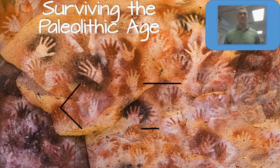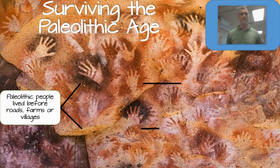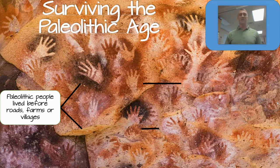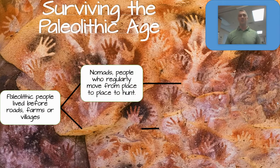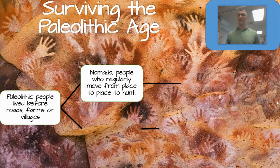Surviving the Paleolithic age — Paleolithic people lived before roads, farms, or villages. There weren't easy ways to travel back and forth. They were not living in one place, farming and growing food. They were not set up in one cozy village. They were constantly on the move. They were called nomads — the term we use to describe people who regularly move from place to place to hunt. They followed the food sources through the seasons, and sometimes had to move to find fresh water.